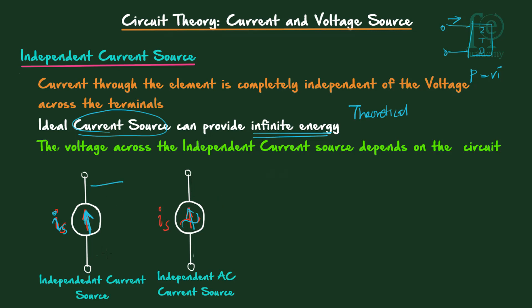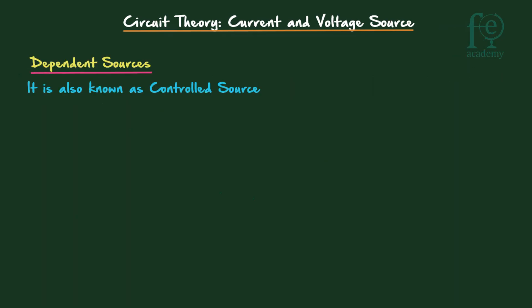Many people think that the voltage across a current source is zero, but that is not true. The voltage across the independent current source depends on the circuit — it can be any value. Now we will see dependent current sources, also known as controlled sources. Unlike independent sources, the current or voltage in a dependent source depends on the current or voltage at some other location in the circuit.